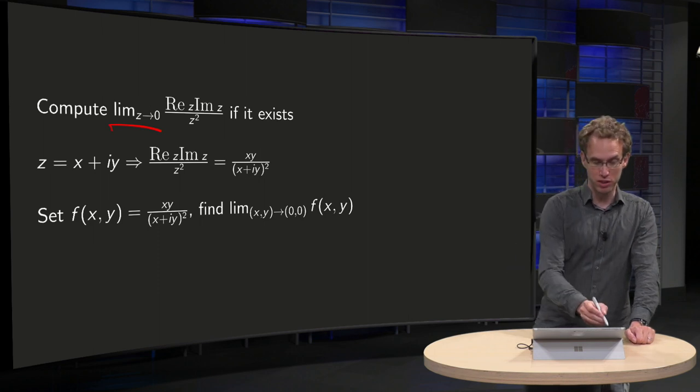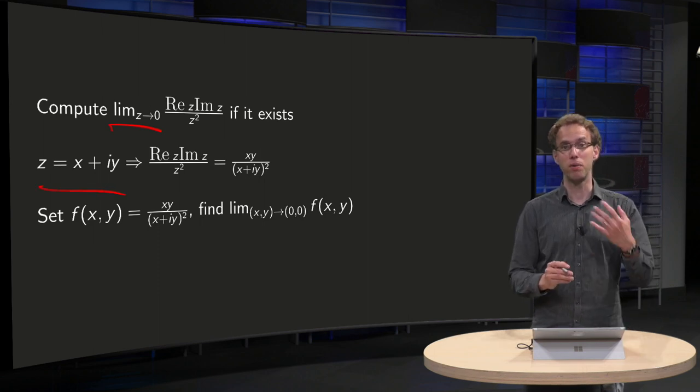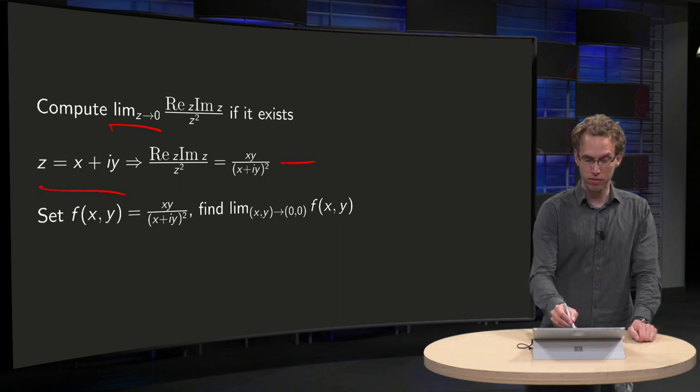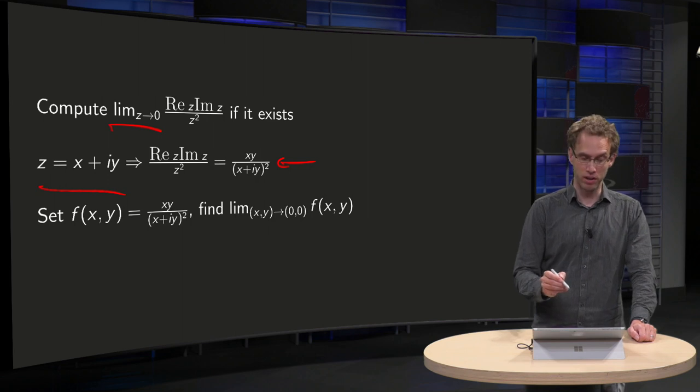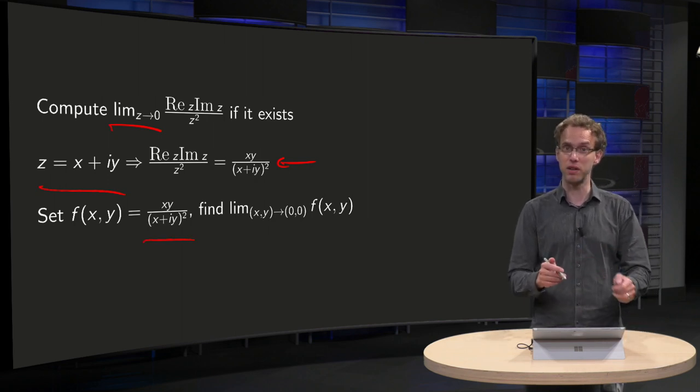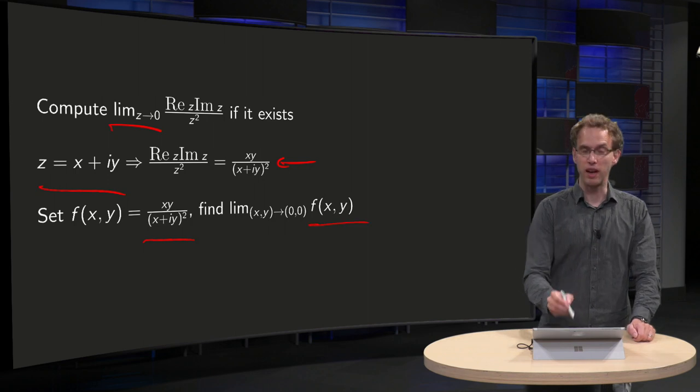Well we set as usual z equals x plus iy, real part of z equals x, imaginary part equals y. So we get the following function, let's call it f of x and y, and then we have to send x and y to 0 and find f of x and y.